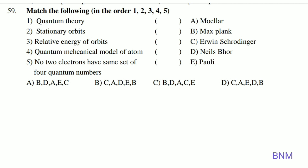Match the following: 1 — Quantum Theory: Max Planck. 2 — Stationary Orbits: Niels Bohr. 3 — Relative energy of orbits: Sommerfeld. 4 — Quantum Mechanical Model of an Atom: Erwin Schrödinger. 5 — No two electrons have the same set of four quantum numbers: Pauli's Exclusion Principle. The correct answer is option C: B, D, A, C, E.